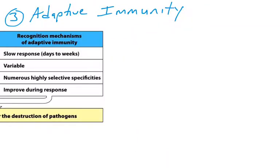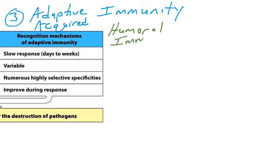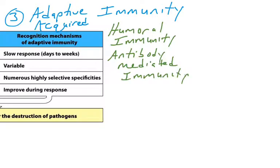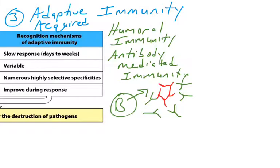Units 2 and 3 will cover adaptive immunity, also known as acquired immunity — I'll use both terms interchangeably. This is broken down into two arms. Humoral immunity, which is Unit 2, is sometimes known as antibody-mediated immunity. B cells have the ability to recognize a pathogen and secrete antibodies that can neutralize or otherwise remove pathogens from the body. We'll have to learn about B cells, where they come from, how they're made, how they make antibodies, and how B cells recognize and attack a pathogen. Unit 2 is covered in Chapters 4, 6, 9, and 10 of the textbook.